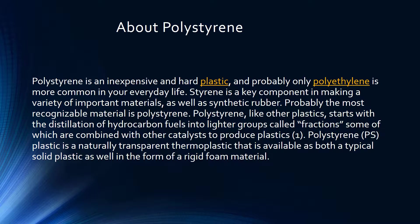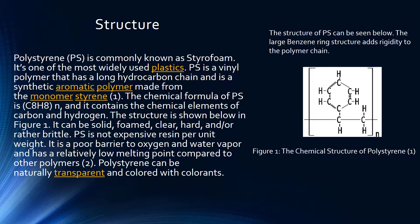Like other materials, polystyrene starts with distillation of hydrocarbon fuels into lighter groups called fractions. Polystyrene is a naturally transparent thermoplastic that can be solid or in a rigid foam form. On the right side you can see the chemical structure of polystyrene — the large benzene ring structure adds rigidity to the polymer chain. It also contains chemical elements like carbon and hydrogen.